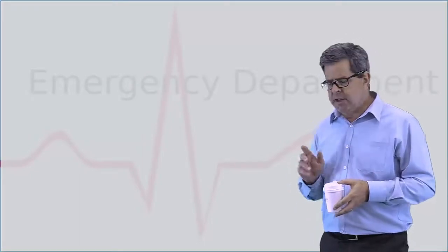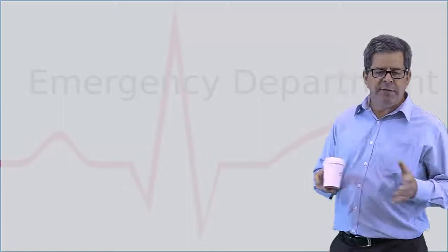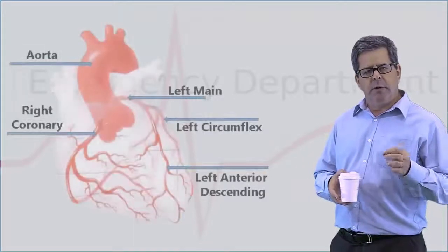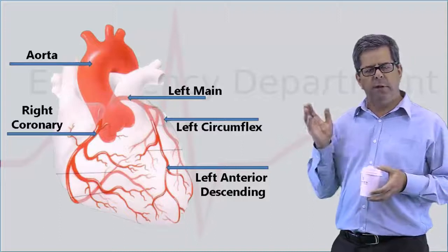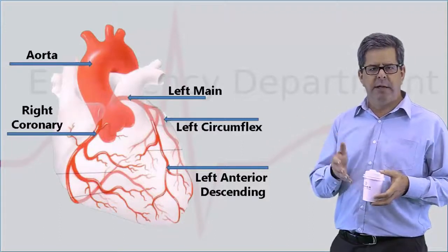Let's have a look first of all at the left side of the heart. The left side of the heart is supplied by the left main coronary artery which divides into the left circumflex and the left anterior descending.